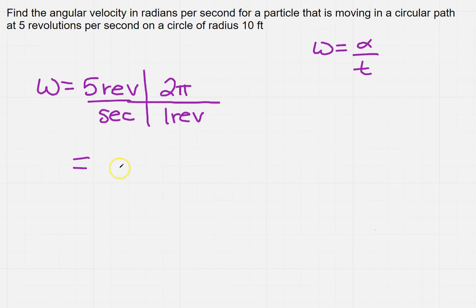So now I just solve that, so I'm going to get 10 pi radians per second.